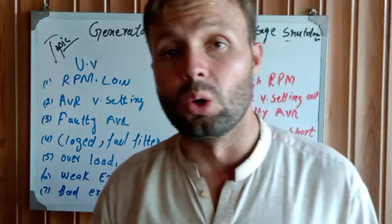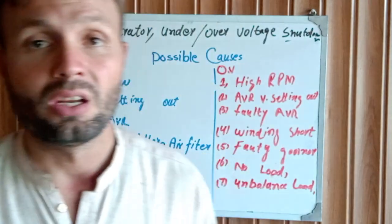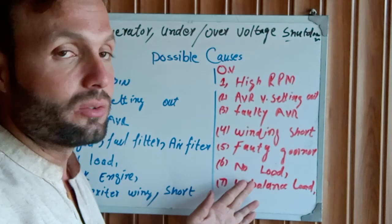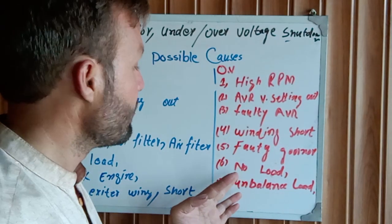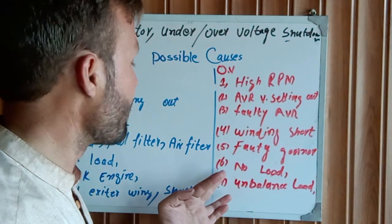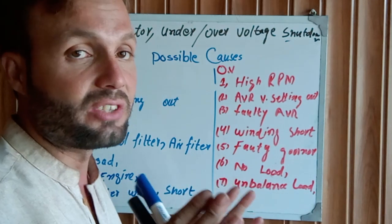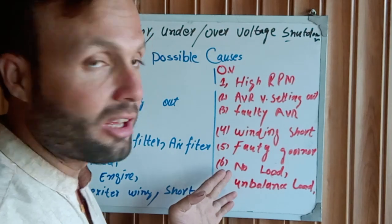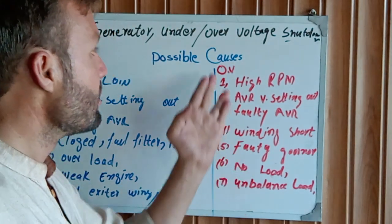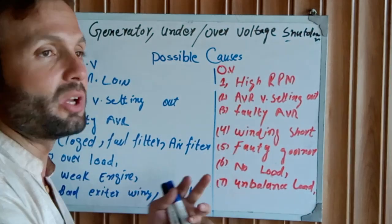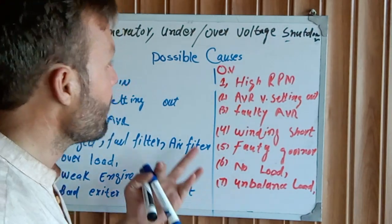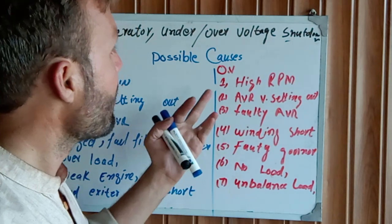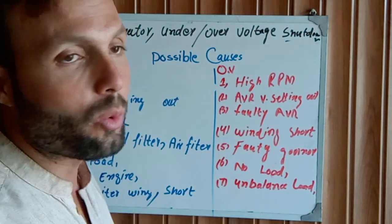Another cause is no load. If your engine is running without any load, the engine RPM can be slightly high. For a 1500 RPM, 50 Hz generator, the no-load RPM may be around 1550 RPM. When the engine is running without load and the RPM is high, the voltage is also high, which means the generator is in an over voltage condition and will trip.